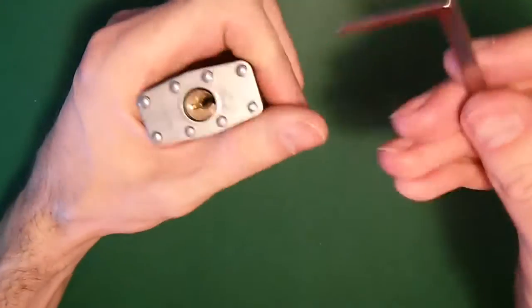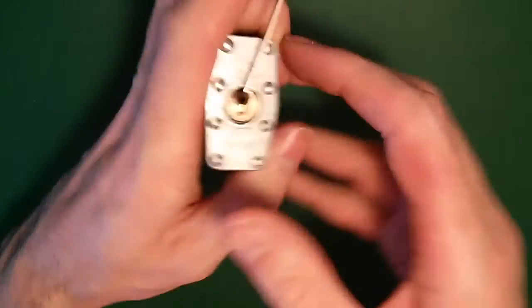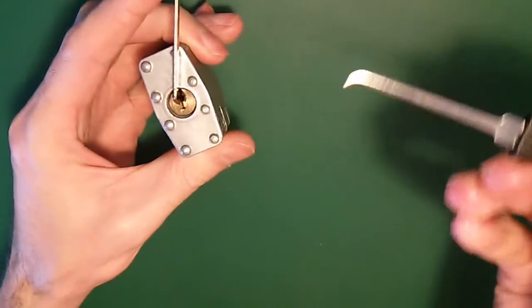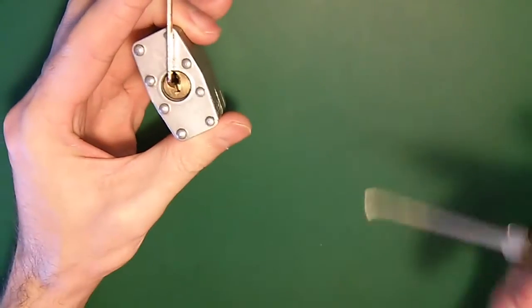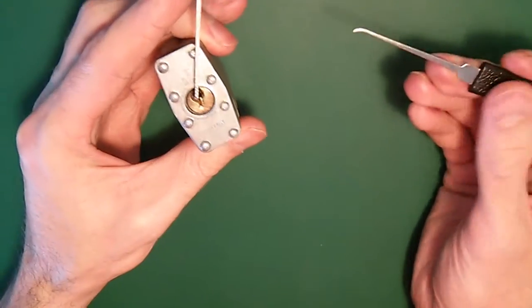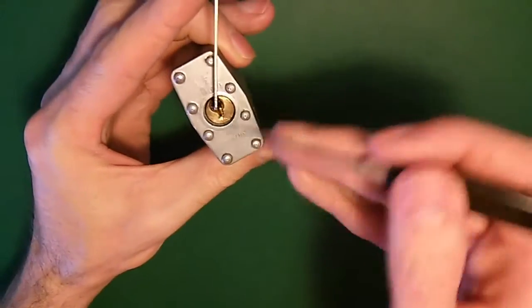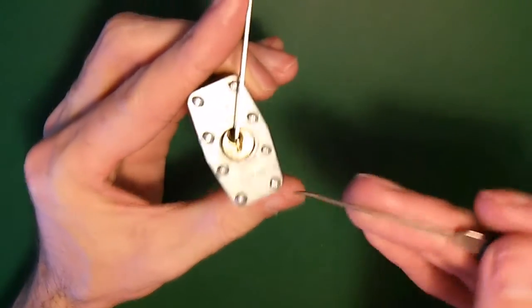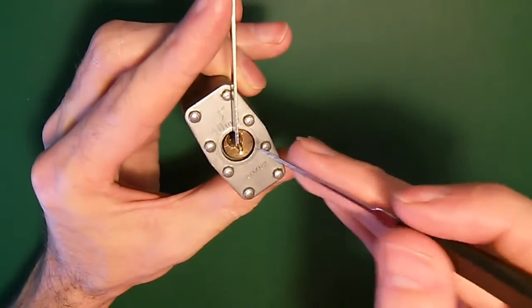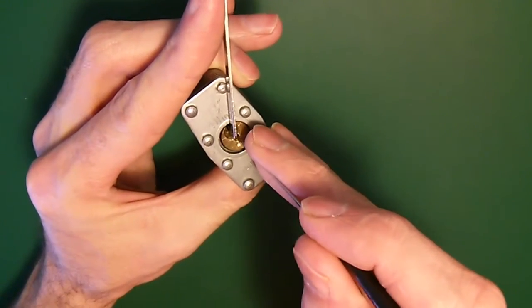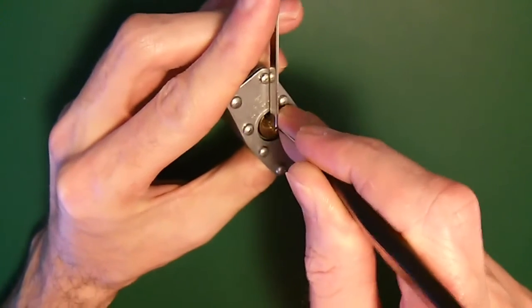So let's give it a pick using bottom of the keyway tension and this hook. It's pretty corroded in here I think. It needs medium to firm tension before you get any kind of binding happening.